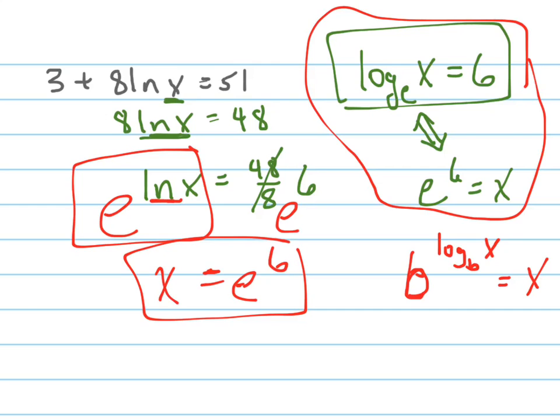And again, if they want you to write it in decimal form, you would just use your calculator to punch in e to the 6. e is the button, the second button above the natural log button, the ln button. And when you do that, you're going to get approximately 403.43 as your answer rounded to two decimal places. That's how you do those problems. Good luck.